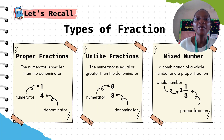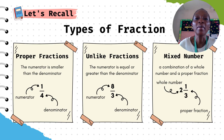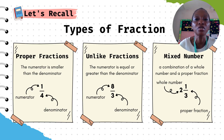Now let's have a recall on types of fractions. We talked about that in the previous class. We started with proper fraction, and we said proper fraction is a fraction whereby the numerator is smaller than the denominator. For example, you have 1 over 4, where 1 is the numerator and 4 is the denominator.